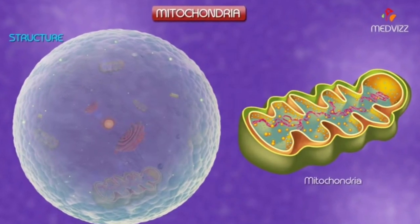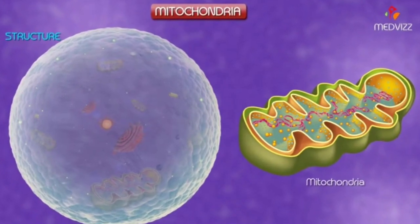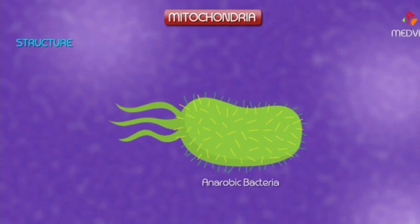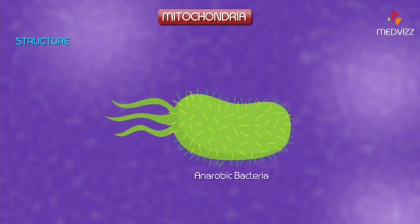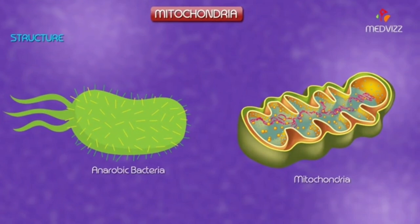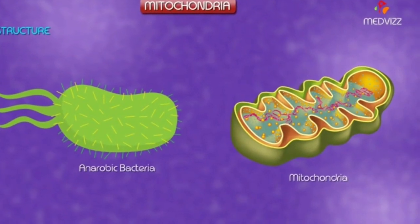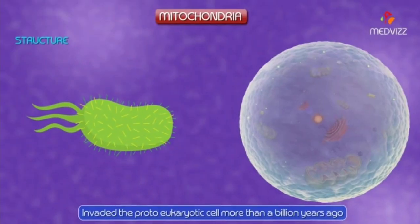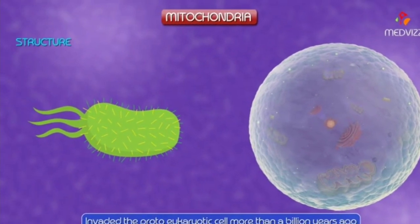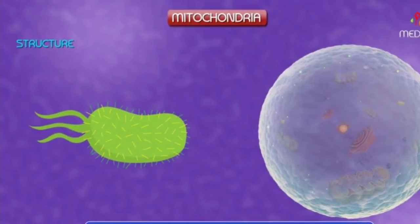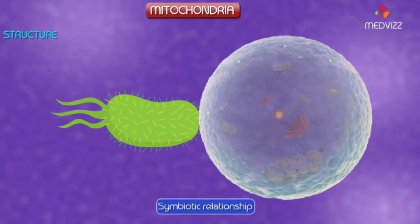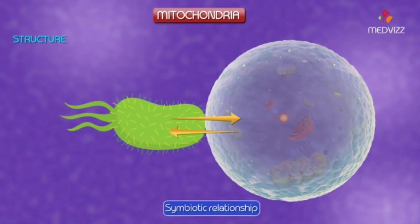Mitochondria are intracellular organelles found in almost all human cells. Mitochondria are found to originate from aerobic bacteria that invaded the prokaryotic cell more than billions of years ago and lived in a symbiotic relationship with it, exchanging energy in the form of adenosine triphosphate (ATP) through residence.